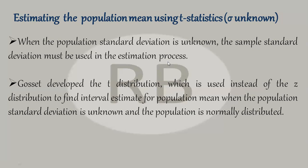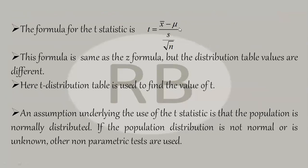When we don't know the population standard deviation, we use the sample standard deviation in the estimation process. For the confidence interval, we use T-distribution, which was developed by Gossett. T-distribution can be used in place of Z-distribution to find the interval estimate for the population mean when the population standard deviation is unknown and the population is normally distributed. This assumption — that the population is normally distributed — is very important. If sigma is unknown and the population is normally distributed, then we use T-statistics.